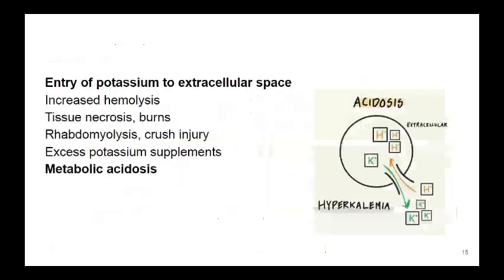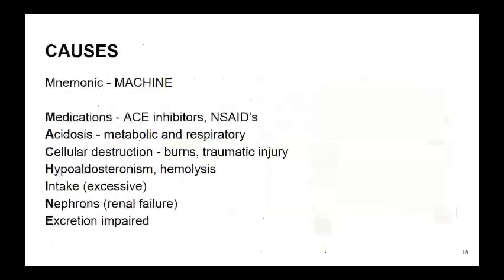Excess potassium supplements and metabolic acidosis also cause hyperkalemia — acidosis causes potassium to move from the cells to the extracellular fluid in exchange for hydrogen ions. A mnemonic for the causes: MACHINE. M for medications like ACE inhibitors and NSAIDs, A for acidosis (metabolic or respiratory), C for cellular destruction due to burns and traumatic injuries, H for hypoaldosteronism and hemolysis, I for intake (excessive), N for nephrons (renal failure), and E for excretion impairment.